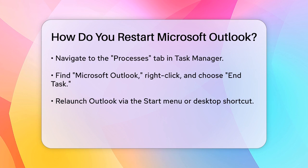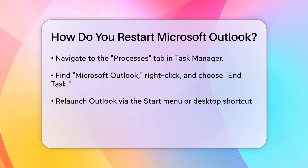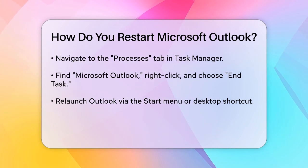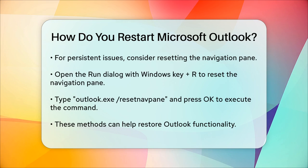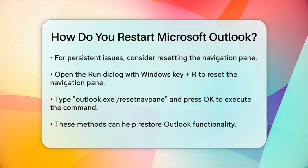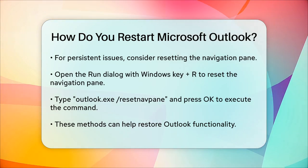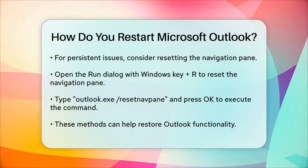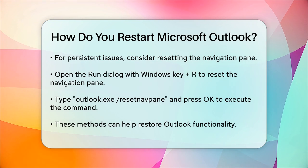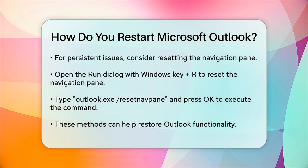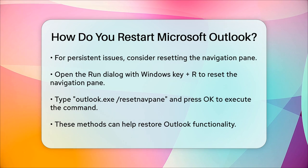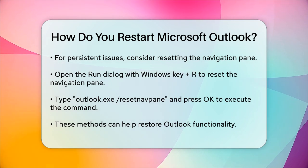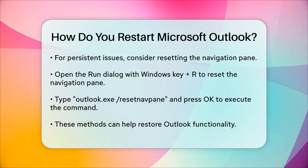If you're dealing with more persistent issues, there's another method you can try. You can reset the navigation pane of Outlook, which can sometimes resolve glitches. To do this, press the Windows key + R to open the Run dialog box, type outlook.exe /resetnavpane, and press OK. This command will reset the navigation pane and restart Outlook in the process.